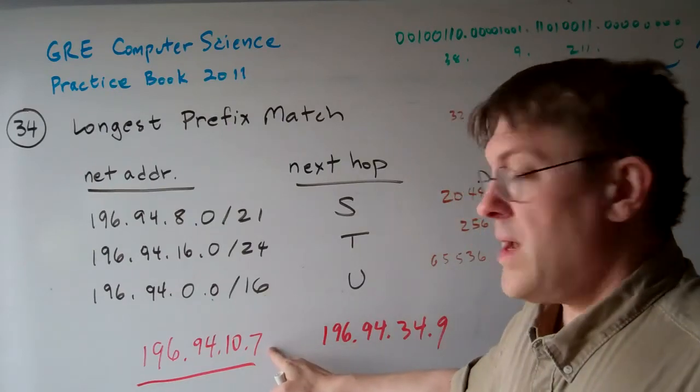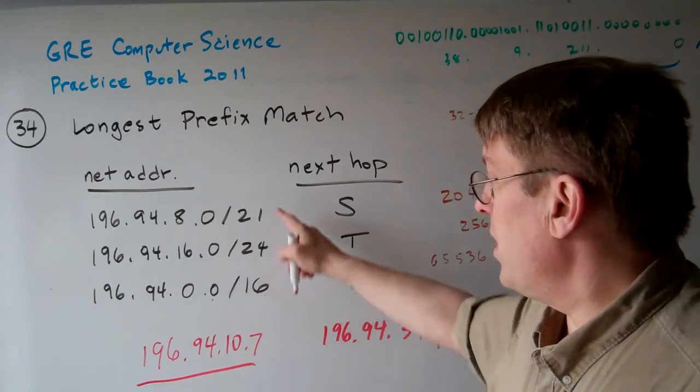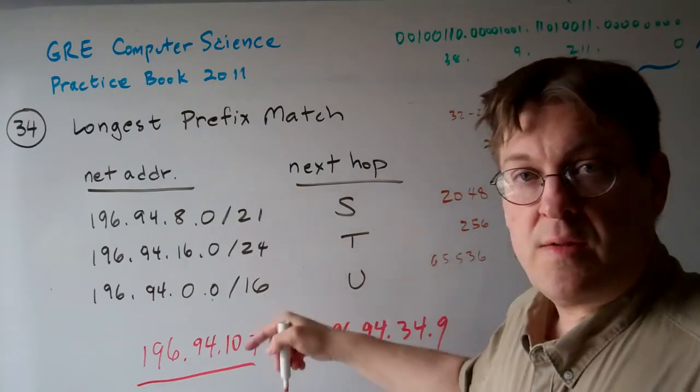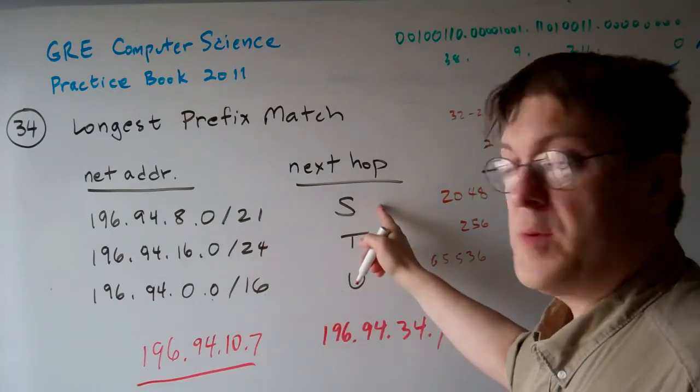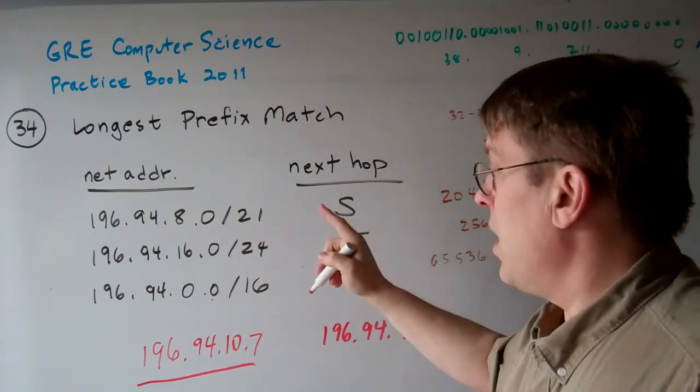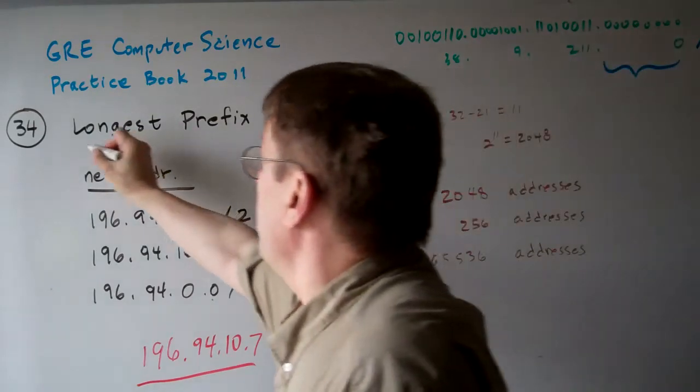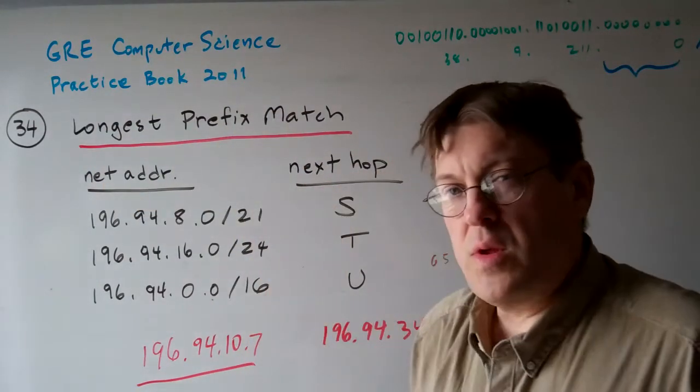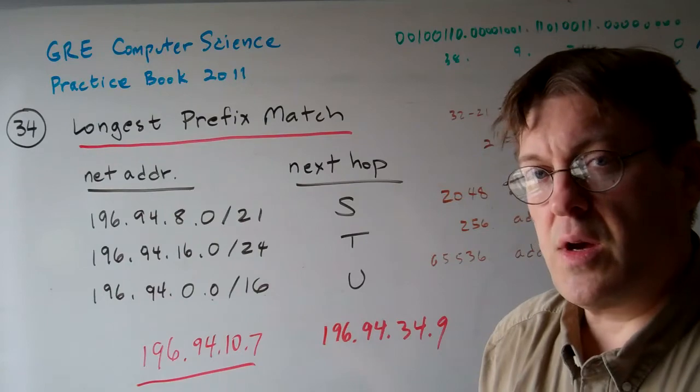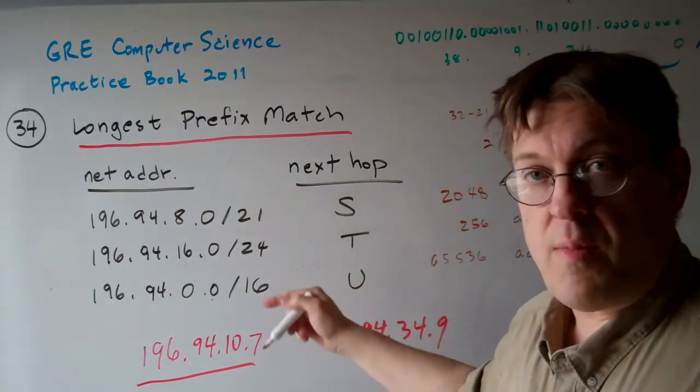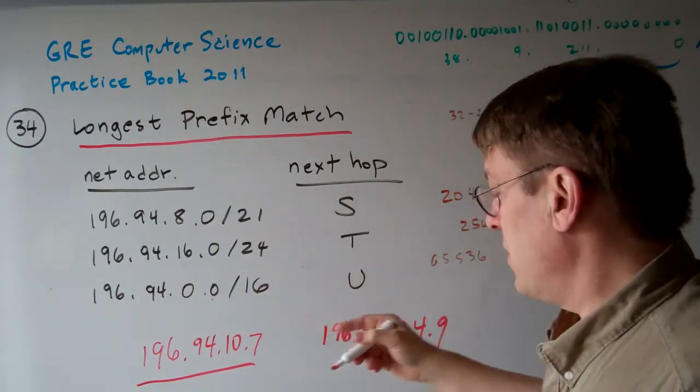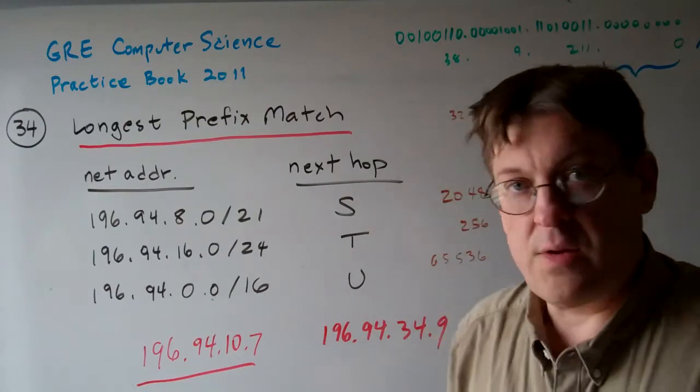Well, this address would have to appear in the range of one of these addresses to go to this particular next hop. With the longest prefix match, we use the most specific address if there are two of them that it fits in. So now let's take a look at these addresses here.